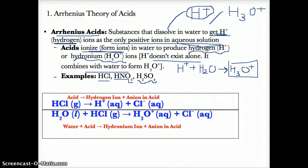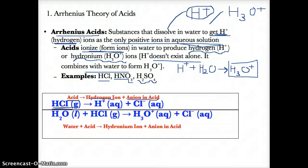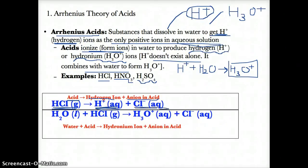An acid that dissolves in water ionizes to form H+ as the only positive ion in solution. Generally, an acid will ionize or break apart to form a hydrogen ion H+ and a negative ion known as an anion. For example, HCl gas will break apart in solution to form H+ (aq) plus the anion Cl- (aq).